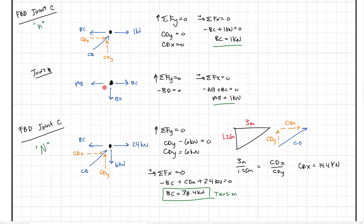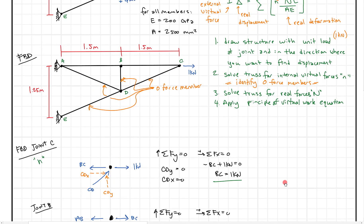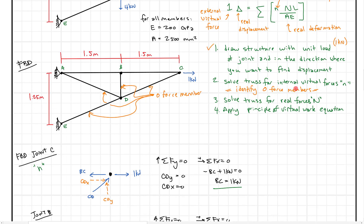Looking at joint B, there are no other forces. We know AB has to equal BC, so AB equals 38.4 kilonewtons as well. So we've now drawn the structure, solved for the internal virtual forces little n, and solved for the real forces N. Now we need to apply the principle of virtual work equation.